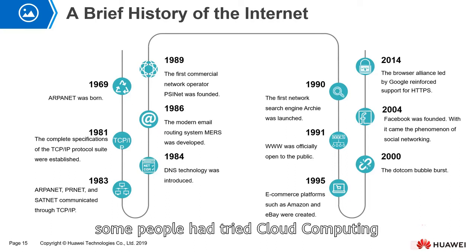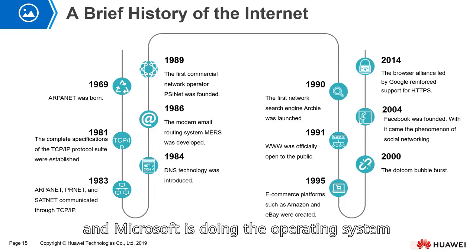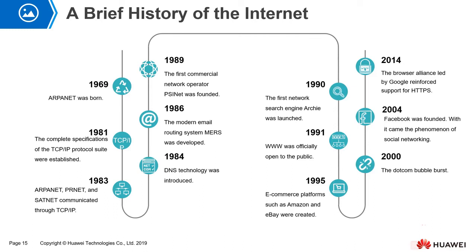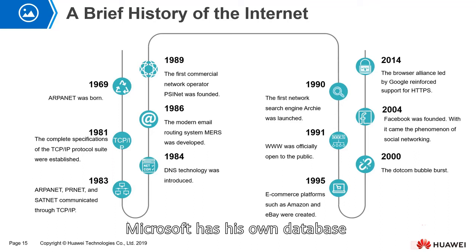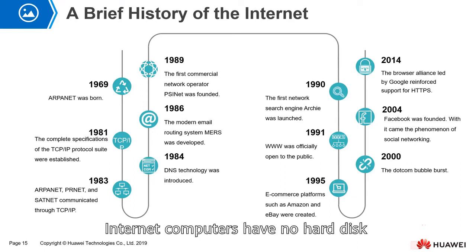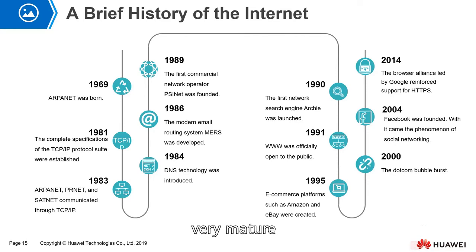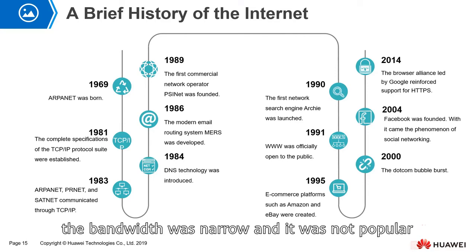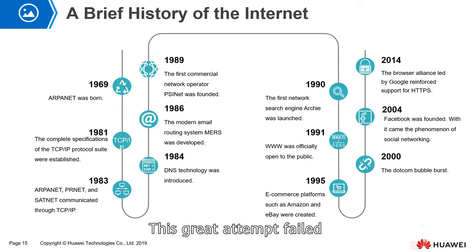Therefore, Amazon developed a system through which they could rent out excess resources to others after Black Friday passed. Before Amazon, some people had already tried cloud computing. The most famous attempt was by the President of Oracle. Oracle was doing databases and Microsoft was doing operating systems. Microsoft developed its own database, so Oracle launched an Internet computer as a response — it had no hard disk or operating system, and all user data and applications were stored in a remote data center. However, the internet at that time was not very mature, the bandwidth was very narrow, and it was not widely adopted. This great attempt ultimately failed, catching up with the burst of the internet bubble in 2000.